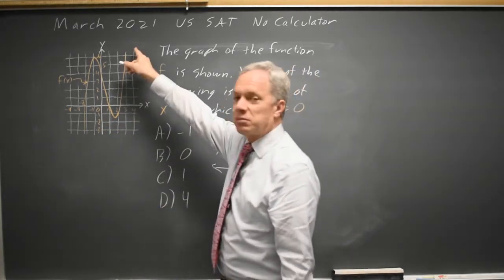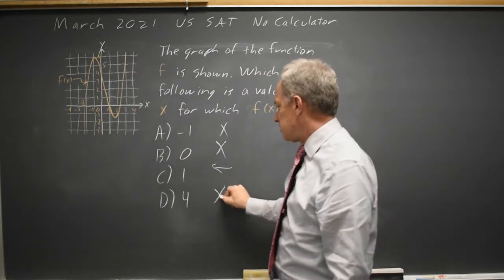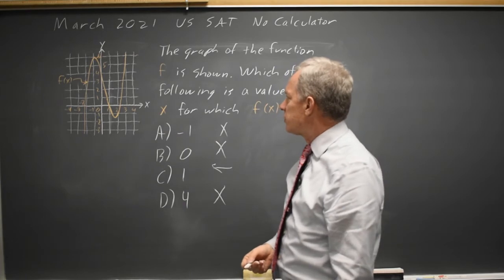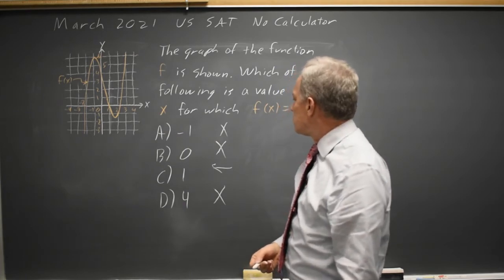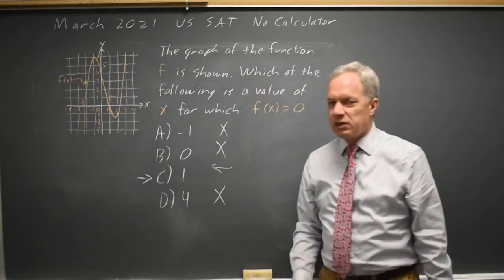And f of 4 is completely off the graph but it looks like we went pretty high, so that's not 0. It's a positive number apparently. The correct answer here is that f of 1 equals 0.